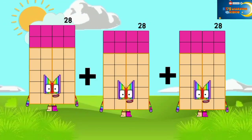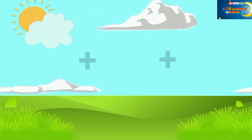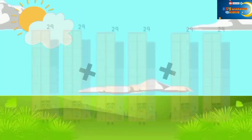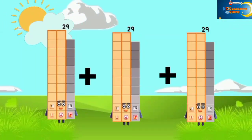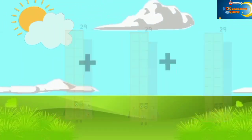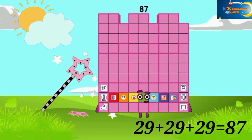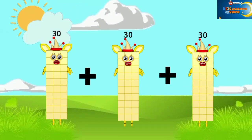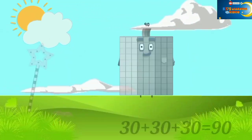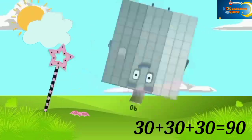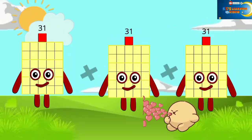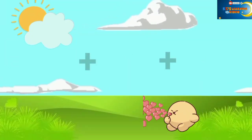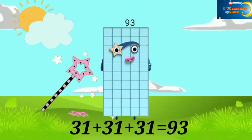28 plus 28 plus 28 equal 84. 29 plus 29 plus 29 equal 87. 30 plus 30 plus 30 equal 90. 31 plus 31 plus 31 equal 93.